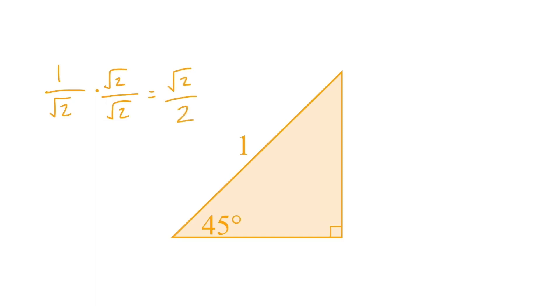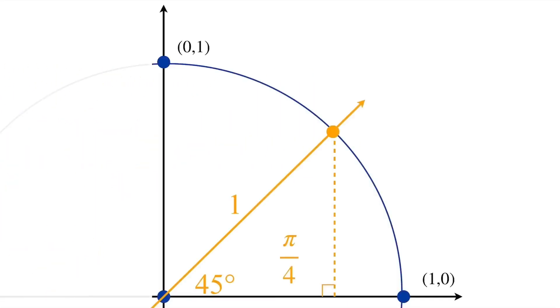That means this leg is root 2 over 2, and so is this leg. So, if we look back at our unit circle, to get to this point right here, we need to go over root 2 over 2 and up root 2 over 2, which means this point is (√2/2, √2/2).